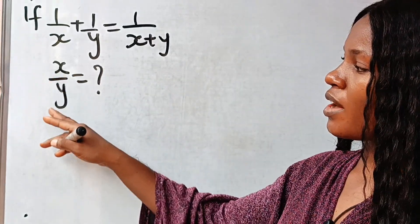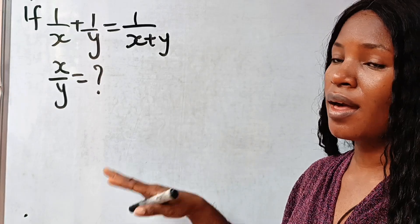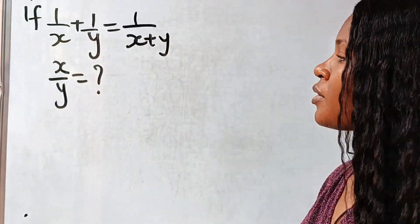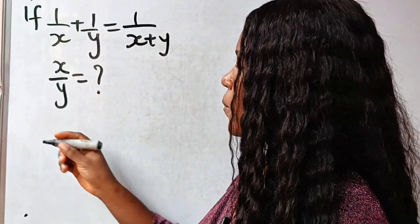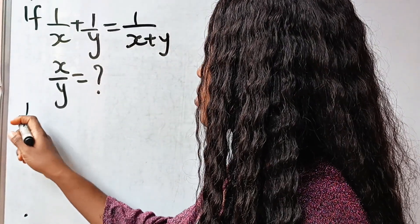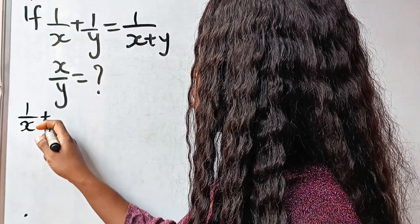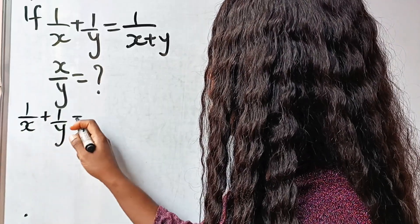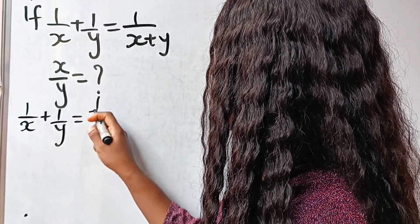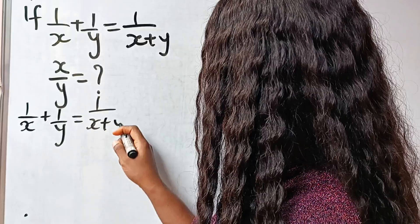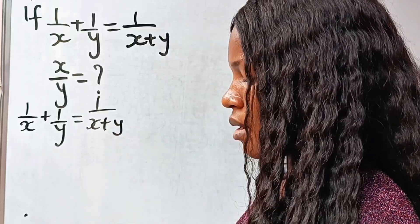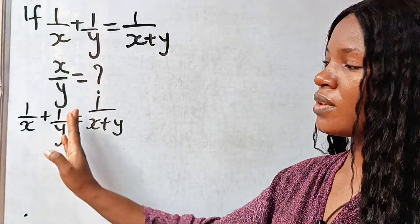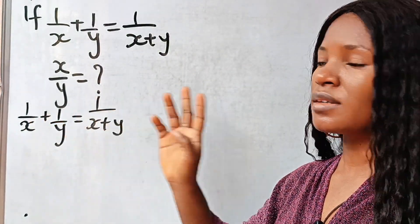We are asked to find x divided by y if this is equal to this. So first of all, we have that 1 over x plus 1 over y is equal to 1 over x plus y. Now we are going to solve the left-hand side.